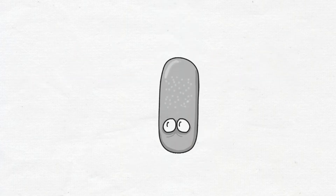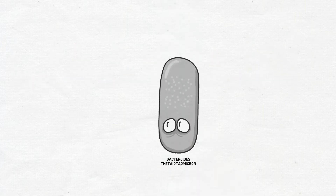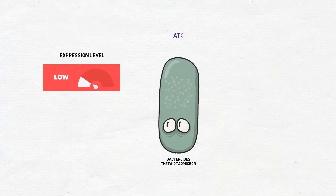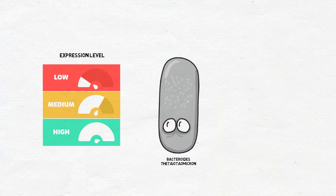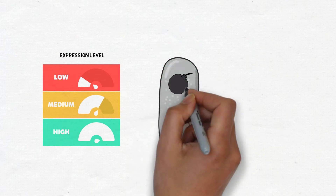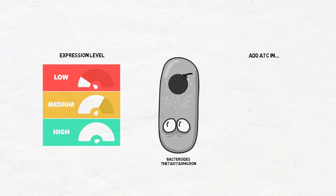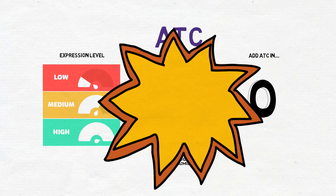Using Bacteroides thetaiotaomicron as our test organism, in the on state, expression from this system spans the entire native range of gene expression in this organism. In the off state, gene expression is off to the point where we can encode a highly toxic gene product in the genome and cells grow normally, until ATC is added.